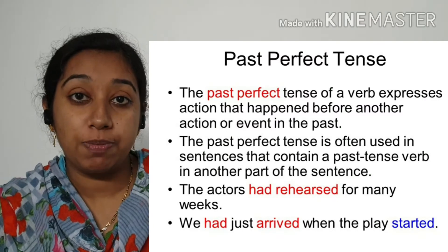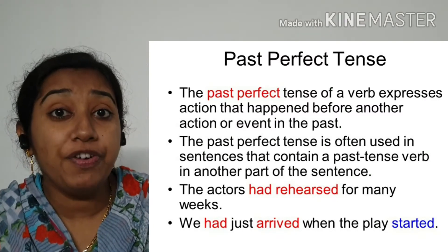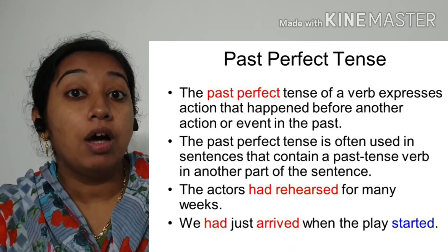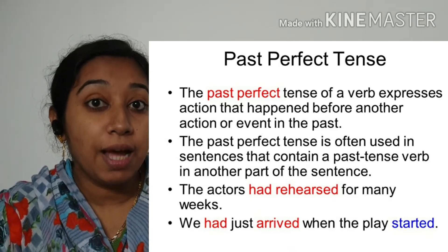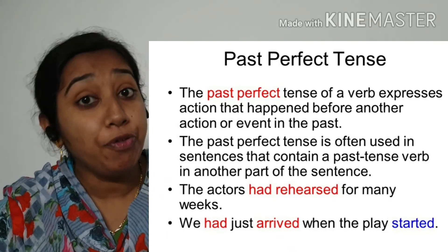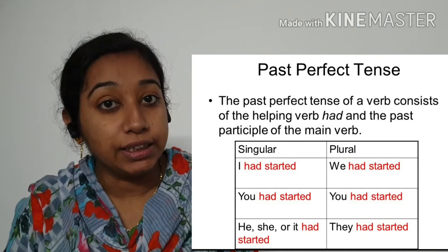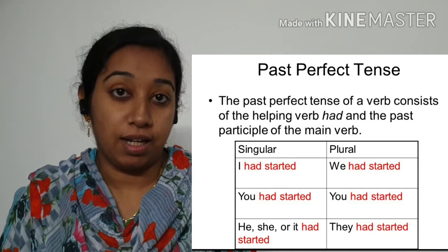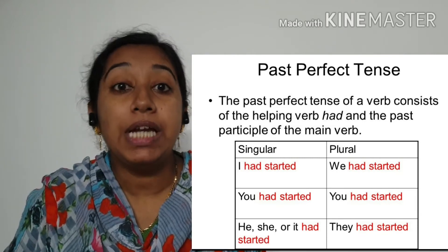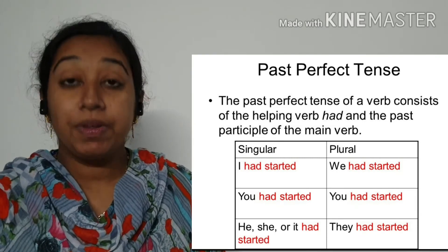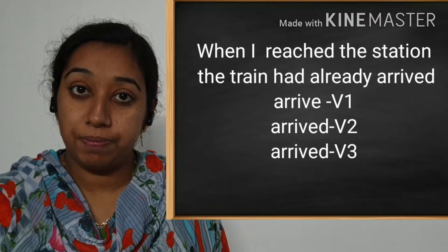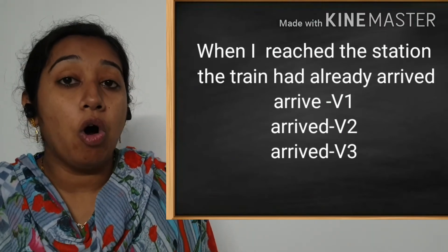Now let's learn the next form of tense — that is the past perfect tense. What is the past perfect tense? The past perfect tense is used to say that something had already happened before the past time. Example: I had eaten a banana. Had eaten. Another example: when I reached the station, the train had already arrived.